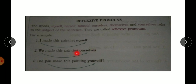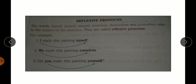The pronoun 'ourself' refers to the subject 'we'. Similarly, 'Did you make this painting yourself?' — 'you' is the subject, and 'yourself' refers back to it. Reflexive pronouns — words like myself, herself, himself, ourselves, themselves, yourselves — refer to the subject of the sentence. The easiest way to recognize them is that they end with 'self' (s-e-l-f) or the plural 'selves' (s-e-l-v-e-s).